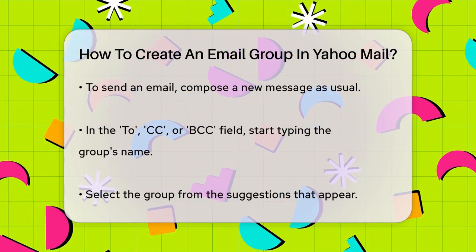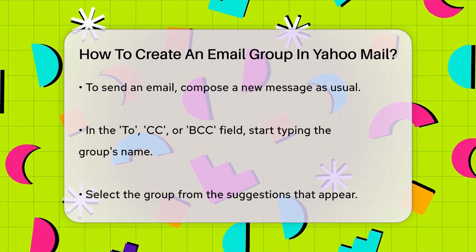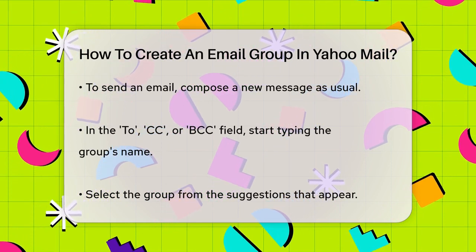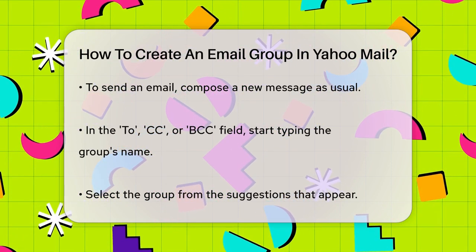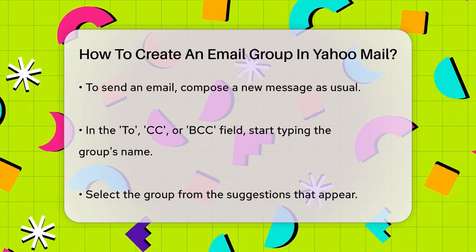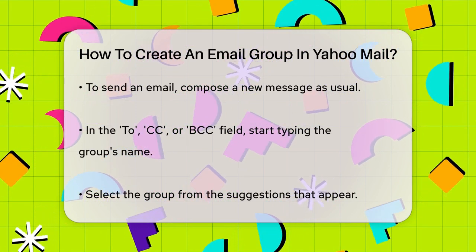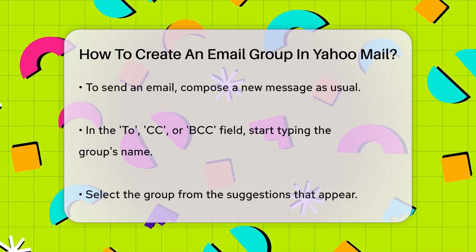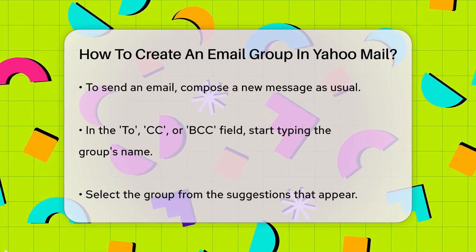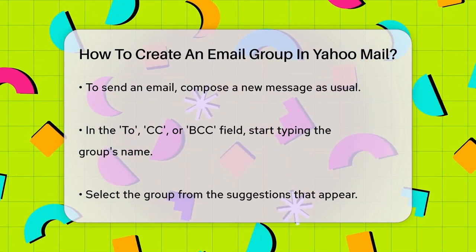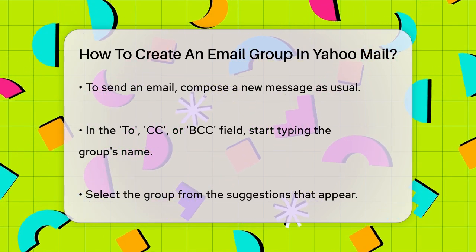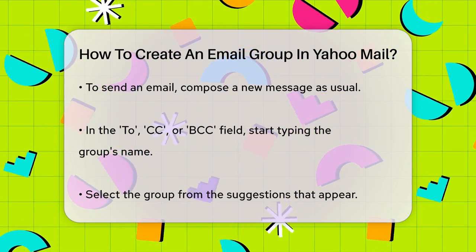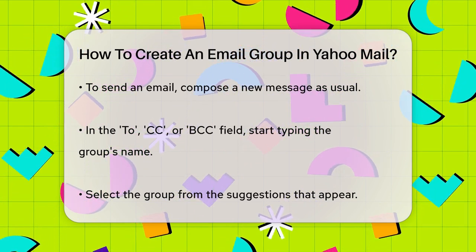To send an email to this group, compose a new email as you normally would. In the To, CC, or BCC field, start typing the name of the group you just created. Yahoo will suggest the group as you type, so select it from the list. Now, just hit Send, and your email will be delivered to everyone in the group.